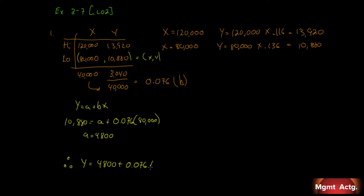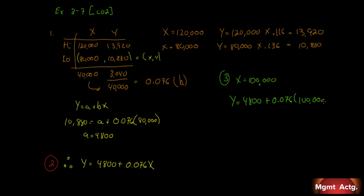Therefore, Y = 4,800 + 0.076X. That completes parts one and two. For part three, if the truck is driven 100,000 kilometers, we solve for Y: Y = 4,800 + 0.076 times 100,000, which gives us 4,800 plus 7,600, equaling $12,400 total cost. That's Exercise 3.7 done.